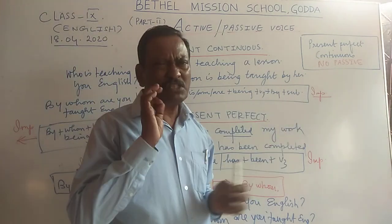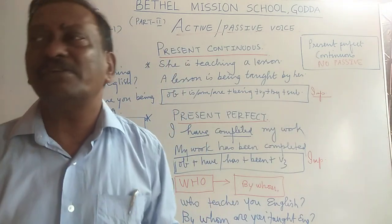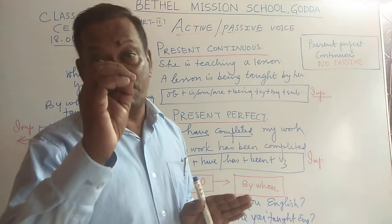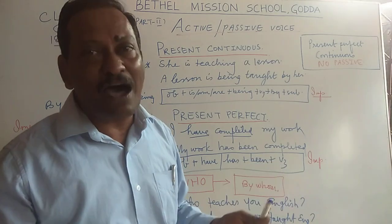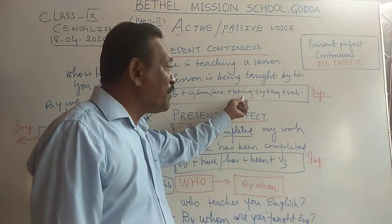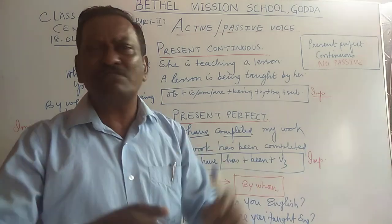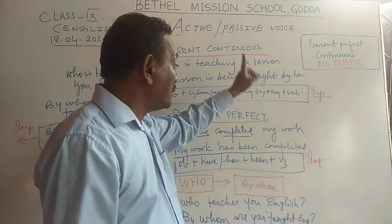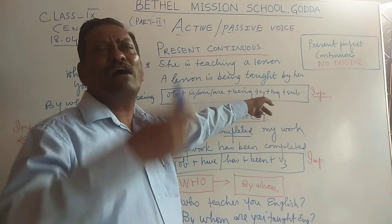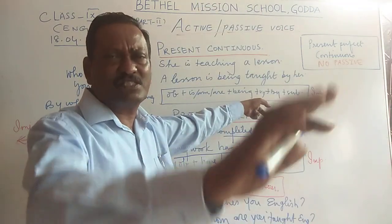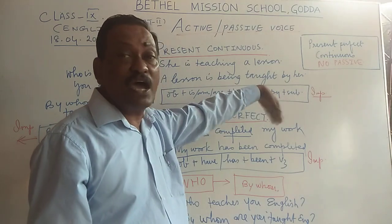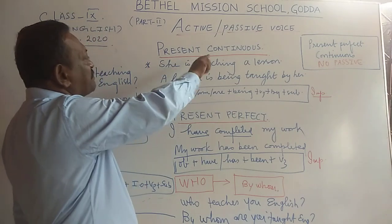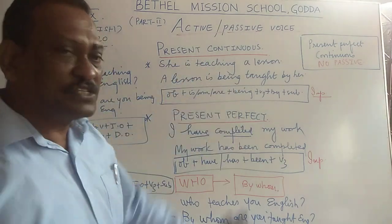Dear students, while discussing active and passive you must keep one thing in mind: the formula, or the formulas. Without these formulas you cannot convert — conversion simply is not possible. So take a special note of the formula. You will have lots of grammar books; consult them and see how they have dealt with these sentences. There are many sentences. This is how we convert a present continuous tense into passive.